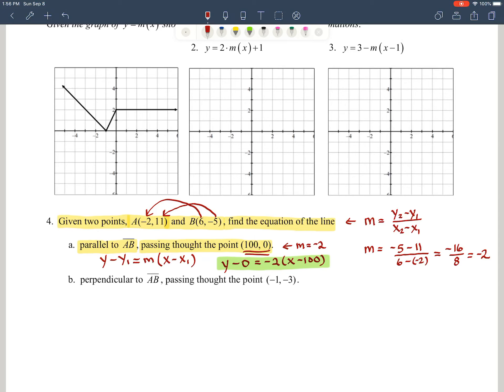Now for the next part of the problem, problem B, says they want the equation of the line that is perpendicular to line AB and passes through the point negative 1, negative 3.